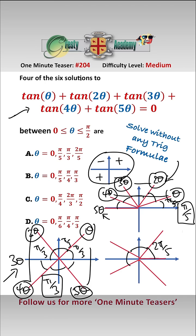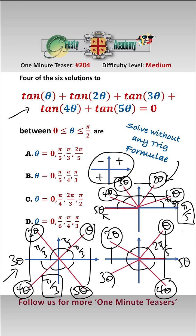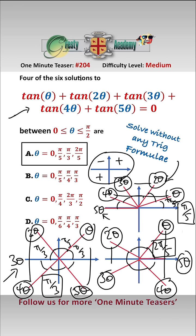Finally, we split into five equal parts of 2π/5, calling them θ, 2θ, 3θ, 4θ, and 5θ. The tangent of θ cancels with tan of 4θ, tan of 2θ cancels with tan of 3θ, and tan of 5θ is of course zero. So 2π/5 is our third solution, and therefore four of the six solutions are 0, π/5, π/3, and 2π/5.